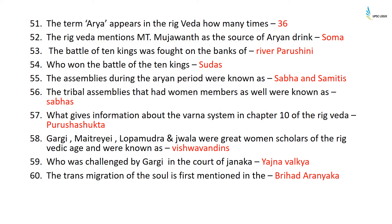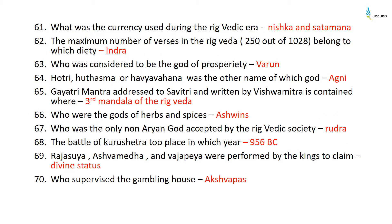Gargi, Maitreyi, Lopamudra, and Jwala were great women scholars of the Rigvedic age and were known as Vishwa Vandins. Gargi challenged Yajnavalkya in the court of Janaka. The transmigration of the soul is first mentioned in the Brihadaranyaka Upanishad. The currency used during the Rigvedic era was Nishka and Satmana.